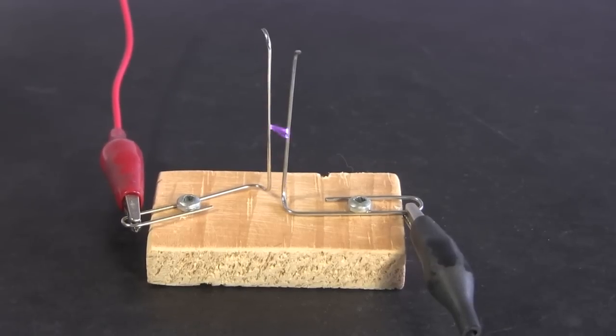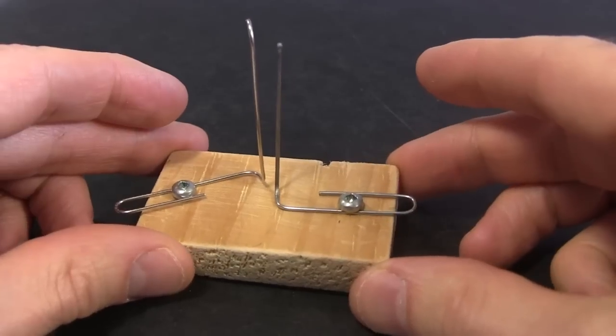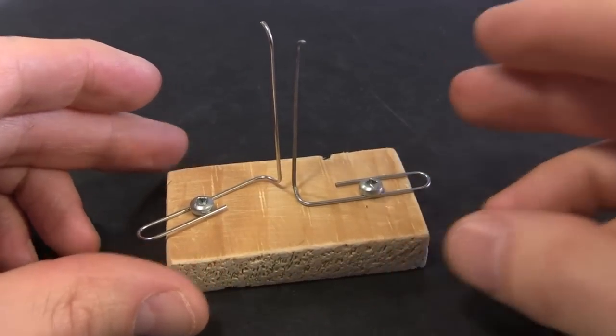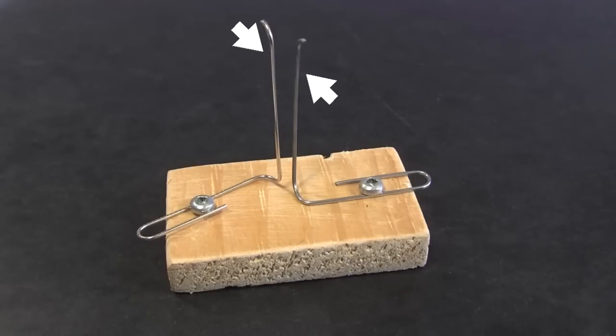Then came the real fun, a Jacob's ladder, or a traveling arc. I attached two paper clips to a piece of wood and bent them so that the bottom here was wider than the top here, and with the sharp ends turned away a bit.